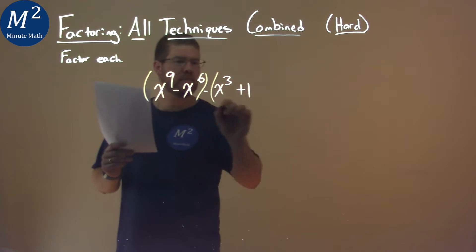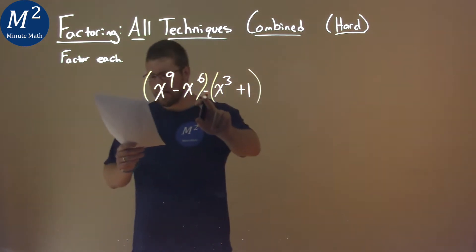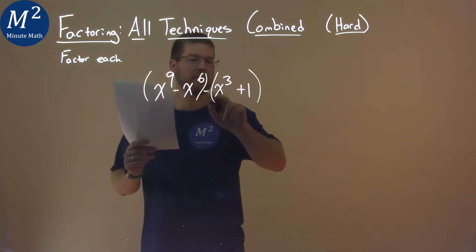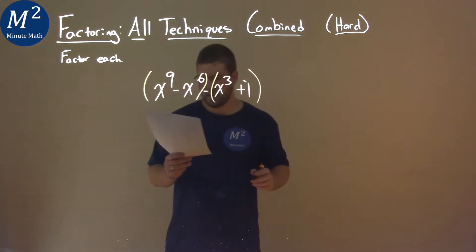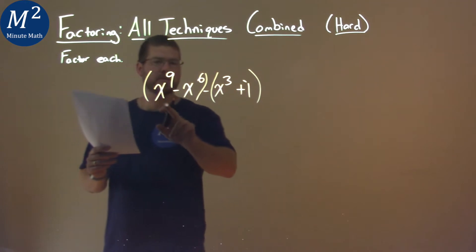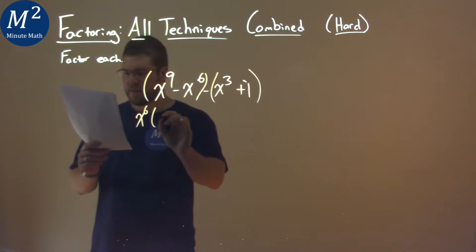If I group the first two parts, and then group the second two parts, but be careful, that subtraction was going to the x to the third, so to cancel that distribution that would happen, I'm going to put a minus sign right there in the one. So with this, we can pull out a common term. x to the sixth is in both parts here, so I pull out an x to the sixth here, and I'm left with an x to the third minus one.